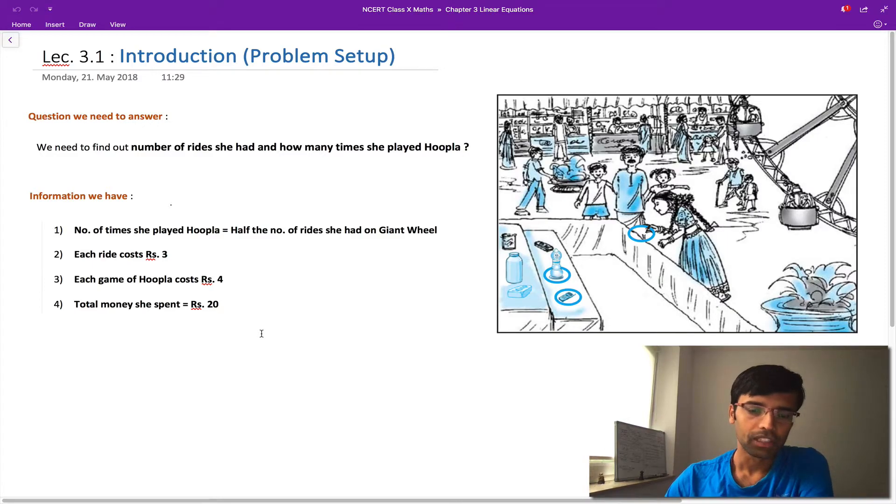Let me go into variables. What are the unknowns? The first thing is the number of rides she had—we don't know it, so let's name this variable as x. The thing that we do not know, we give it some name, a variable. The other thing we need to find out is how many times she played the game hoopla, so this variable we call y. Okay, we are going somewhere. The number of times she played hoopla is y, the number of rides she had is x. So we just need to find out the correct value for x and y which will satisfy all this information we have.